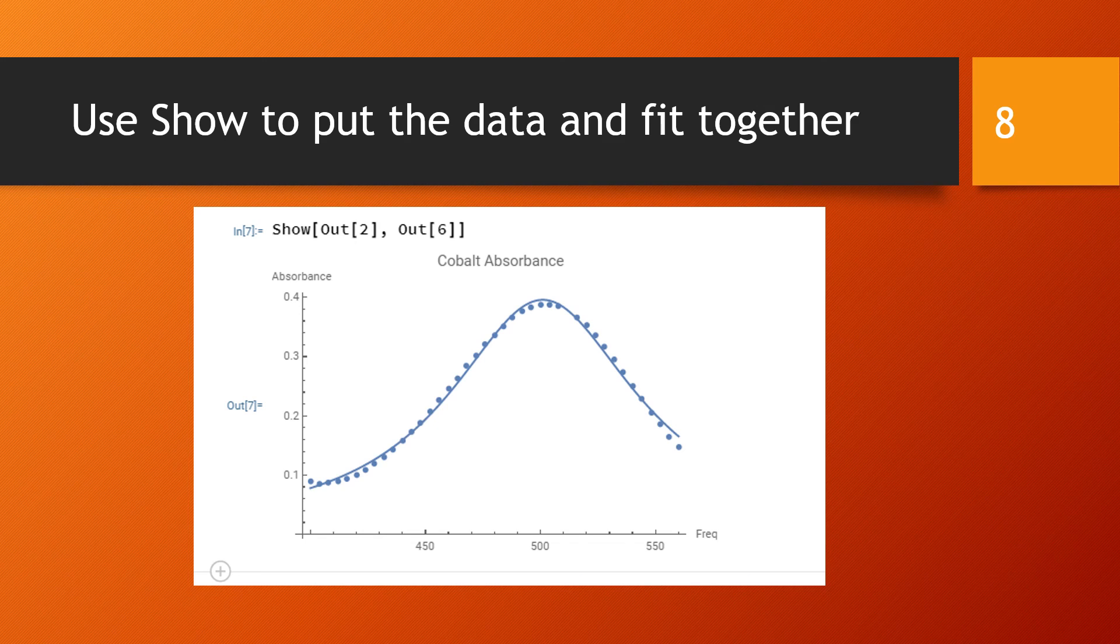Finally we use Show to put together out2, which was the list plot of the data with the title and axis labels, and out6, which was a plot of the fit function found from FindFit. And so we get our final result of the data and the fit found by Mathematica plotted together.